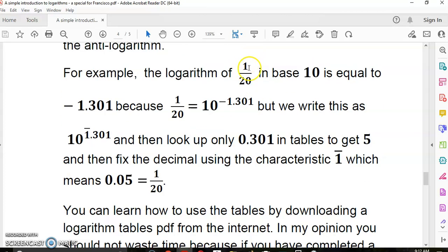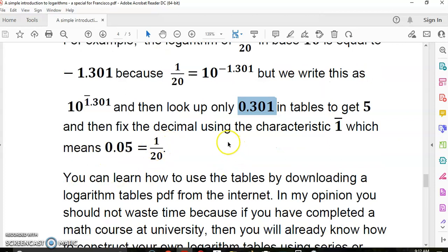It would mean that once we convert using the anti-log tables, we need to shift the decimal place 1 to the left, or if it was bar 2, then 2 to the left, and so on. For example, the logarithm of 1 over 20 in base 10 is equal to minus 1.0301, because 1 over 20 is equal to 10 to the power of minus 1.0301. But we write this as 10 to the power of bar 1 dot 301, and then look up only 0.301 in the tables to get 5, and then fix the decimal using the characteristic bar 1, which means 0.05.